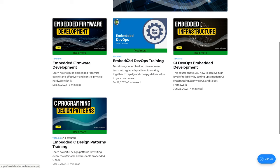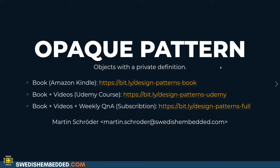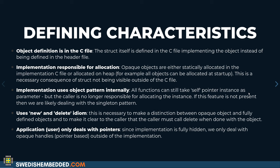Let's jump right in and look at the opaque pattern. The opaque pattern is very similar to the object pattern, but the only difference is that we are hiding the definition of the object itself. With this, we're also moving the responsibility of allocating the object from the caller to the implementation itself, so the object becomes completely hidden and we have full freedom with the implementation.